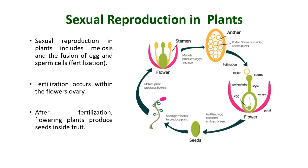Sexual reproduction in plants includes meiosis and the fusion of egg and sperm cells in a process known as fertilization. Fertilization occurs within the flower's ovary. After fertilization, flowering plants produce seeds inside fruit. Therefore, seeds are the product of sexual reproduction, and the seeds will germinate to produce new plants.